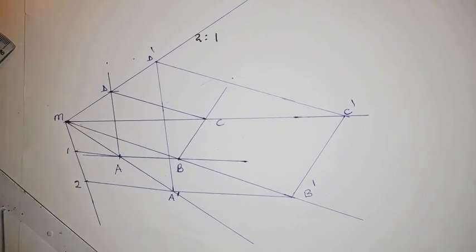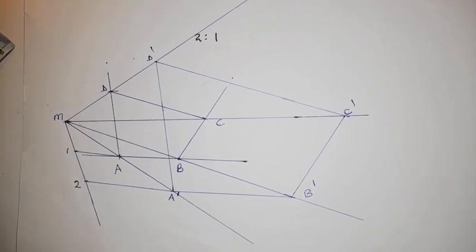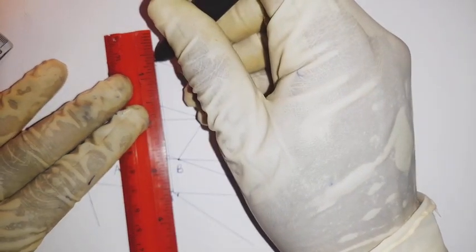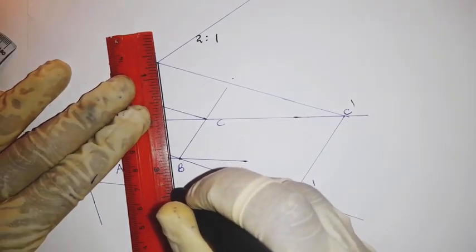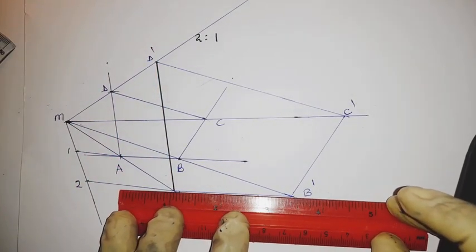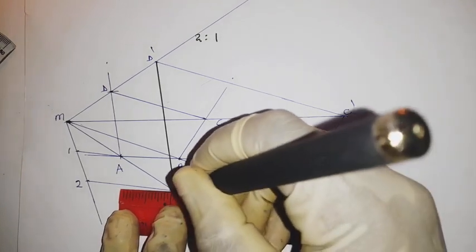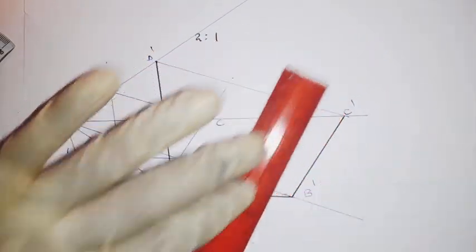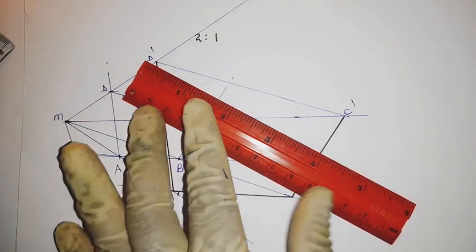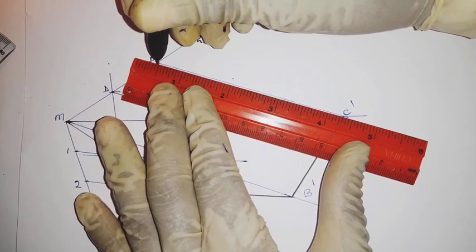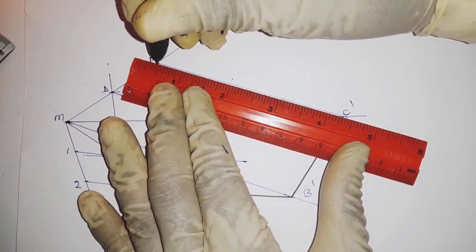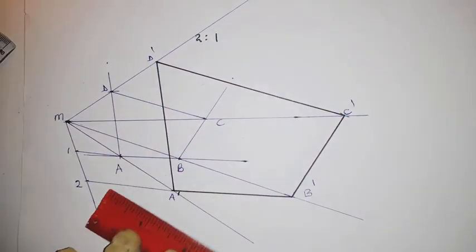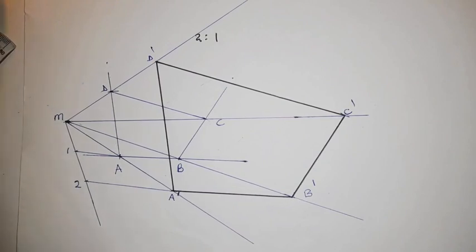So this is our new quadrilateral, whereby we can now join our lines. The first line is here, the second line is here, and our third line is here. So this is how we use radial method to enlarge a given shape. Thank you very much for watching. Consider subscribing to the channel.